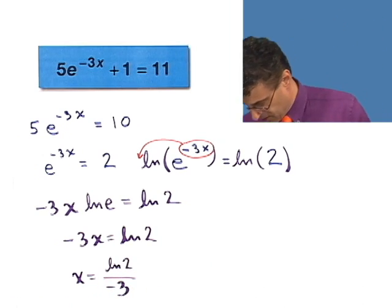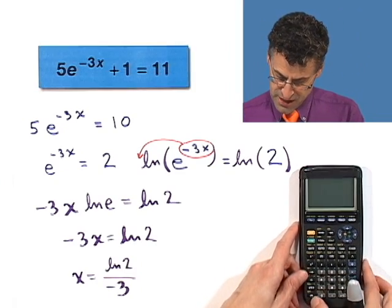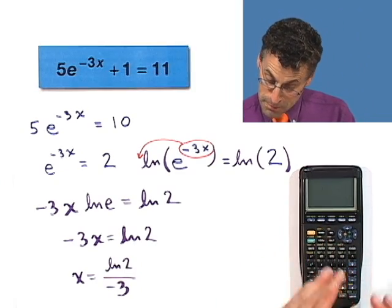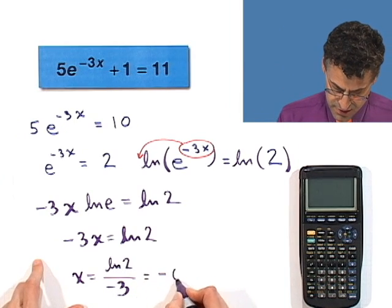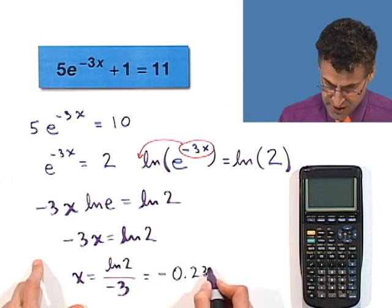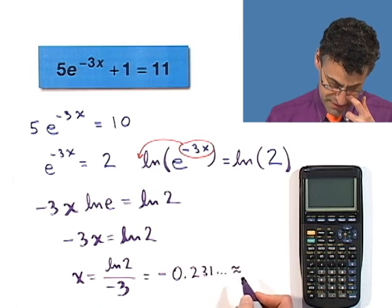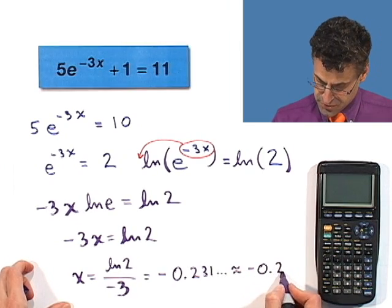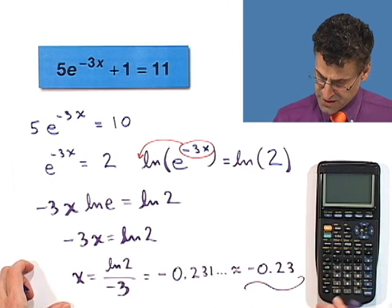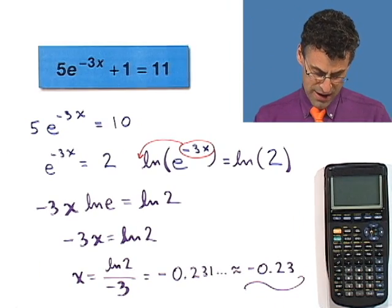Or you could actually figure this out on a calculator. Take out a calculator or go online. And if you type this in, what's the answer? The answer is negative, of course, 0.231, and it goes on and so forth. And if you want to round that to the nearest hundredths, let's say, that would be negative 0.23 as an approximation.